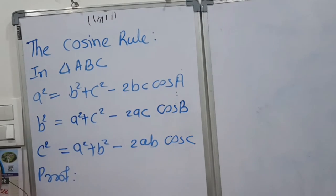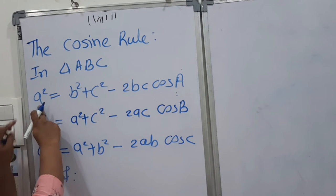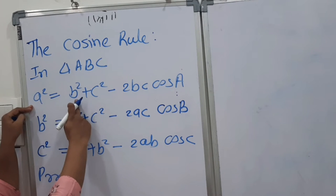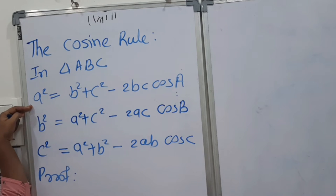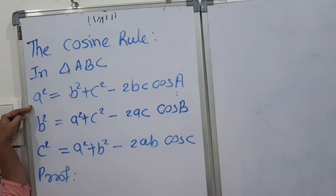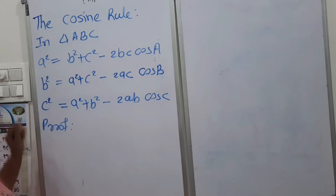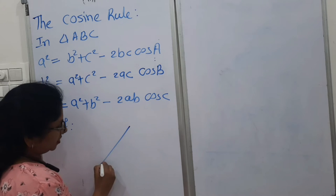First we will try to understand the statements — what is A squared, B squared, C squared. In previous videos I have explained these notations; if you missed those, you can find them on the I button. Now let us start the proof.